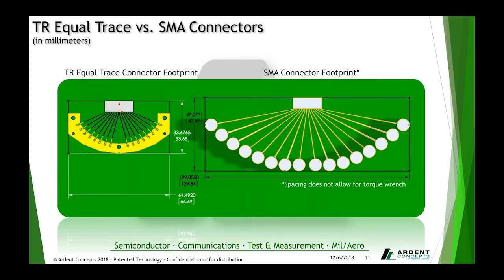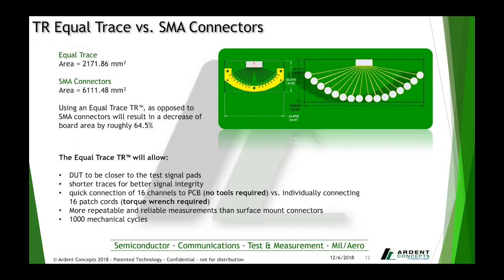We ran a quick comparison to illustrate the benefits of the TR Equal Trace connector versus SMA connectors on a PCB — using minimum spacing for the SMA connectors. For the TR Equal Trace, the area is about 2,100 millimeters squared, compared to about 6,100 millimeters squared for the SMA connector. By using the Equal Trace connector as opposed to SMA, you're saving roughly 64 percent of your board space, allowing you to get closer to the device and decrease trace lengths for better signal integrity.